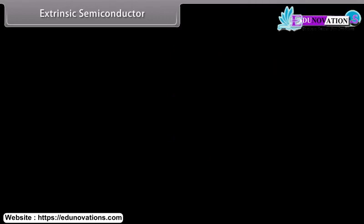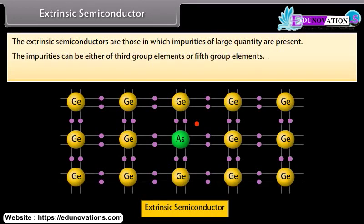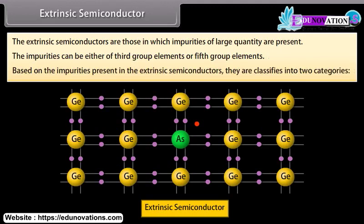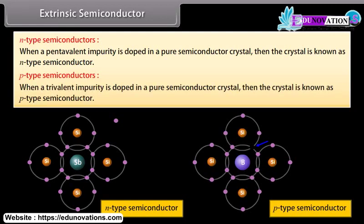Extrinsic semiconductors are those in which impurities of large quantity are present. The impurities can be either third group elements or fifth group elements. Based on the impurities present, extrinsic semiconductors are classified into two categories: N-type semiconductor — when a pentavalent impurity is doped in a pure semiconductor crystal, the crystal is known as N-type semiconductor; and P-type semiconductor — when a trivalent impurity is doped, the crystal is known as P-type semiconductor.